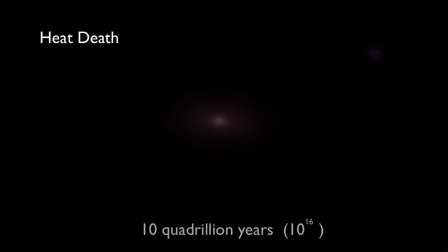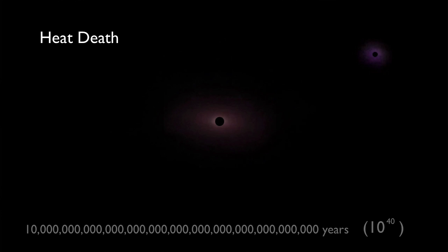Matter within each supercluster would be either disorganized from random collisions and or have fallen into supermassive black holes. After ten to the fortieth years, all protons and neutrons will have decayed, leaving behind gamma rays and leptons, of which the electrons are an example.